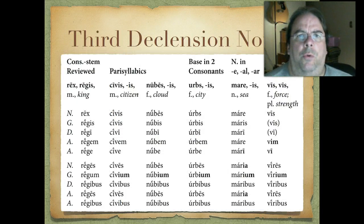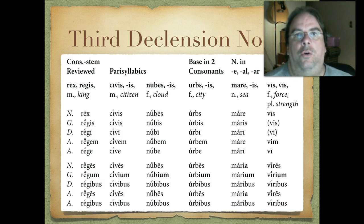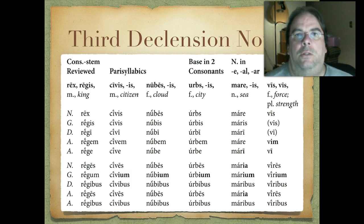Let's look at some examples. The consonant-stems we've seen before, like rex, regis. Then we have three different categories of third declension I-stems: the parasyllabics, the base in two consonants, and the neuters ending in E, AL, and AR. So parasyllabic means the nominative and genitive have the same number of syllables. Like civis, civis — citizen. If we fully decline that: civis, civis, civi, civem, cive. Then the plural: cives, civium — there's that one difference — civibus, cives, civibus.